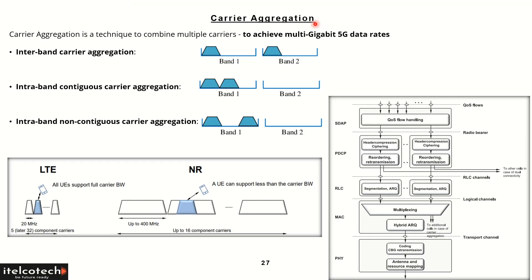Carrier aggregation is one of the important concepts in 5G NR, and it is helping to combine different frequency carriers and achieve the multi-gigabit 5G data rates which are defined by ITU.